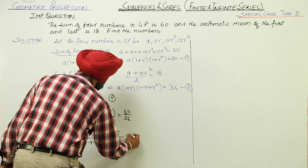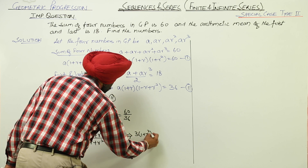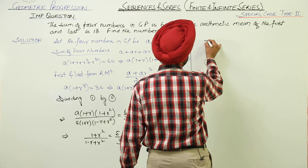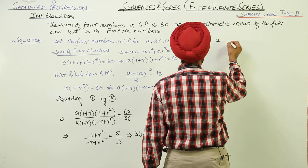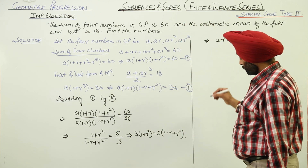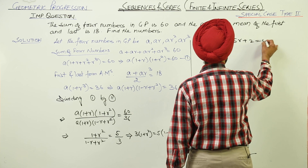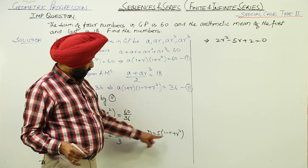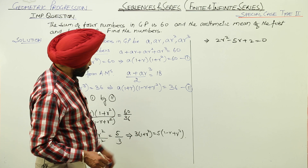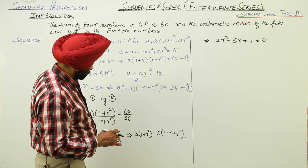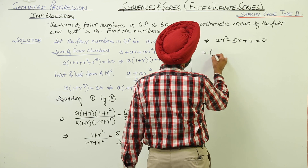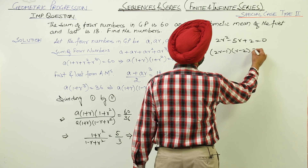Cross-multiplying: 3(1 + r²) = 5(1 - r + r²). Expanding: 3 + 3r² = 5 - 5r + 5r². Rearranging: 2r² - 5r + 2 = 0. Factorizing this quadratic: (2r - 1)(r - 2) = 0.